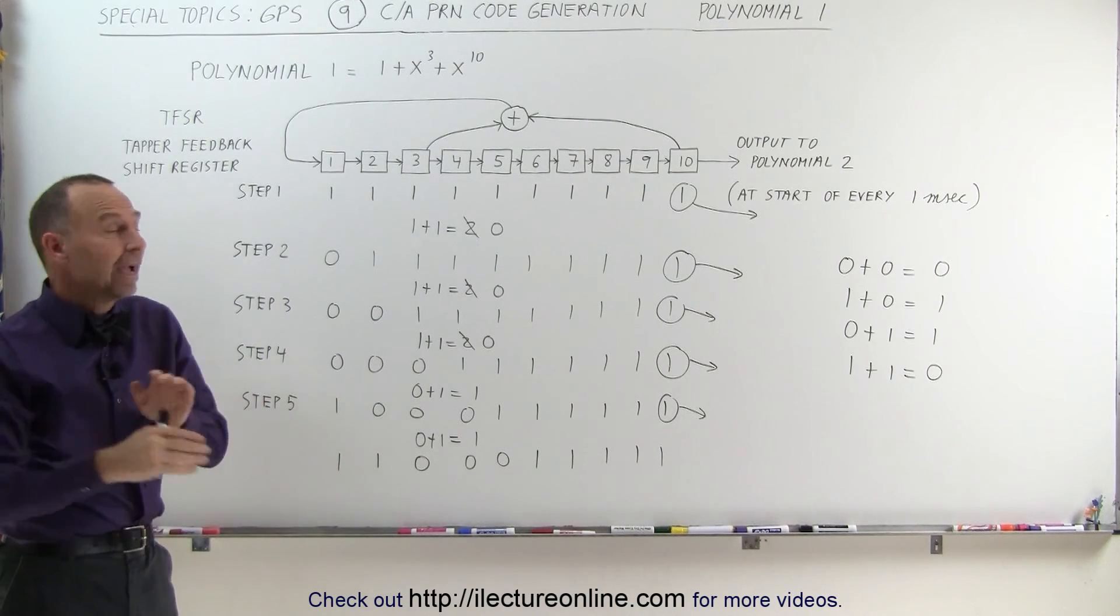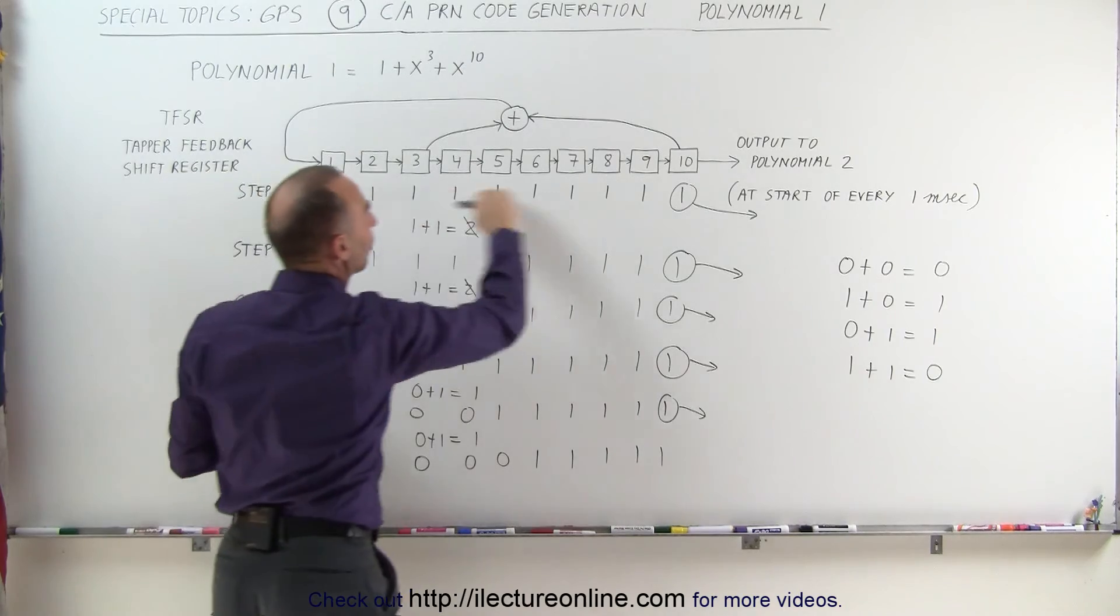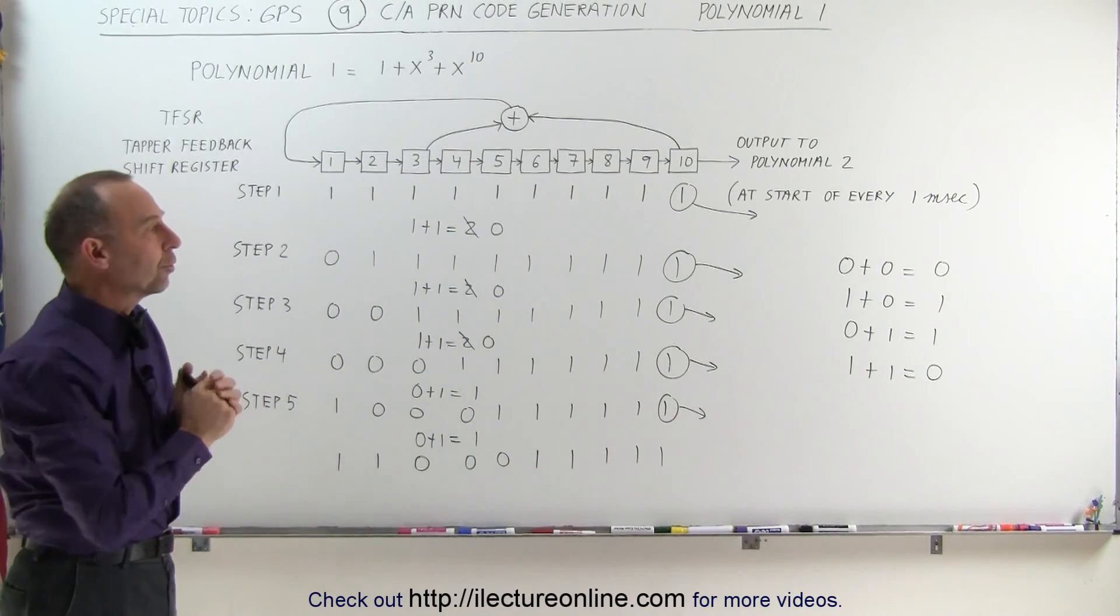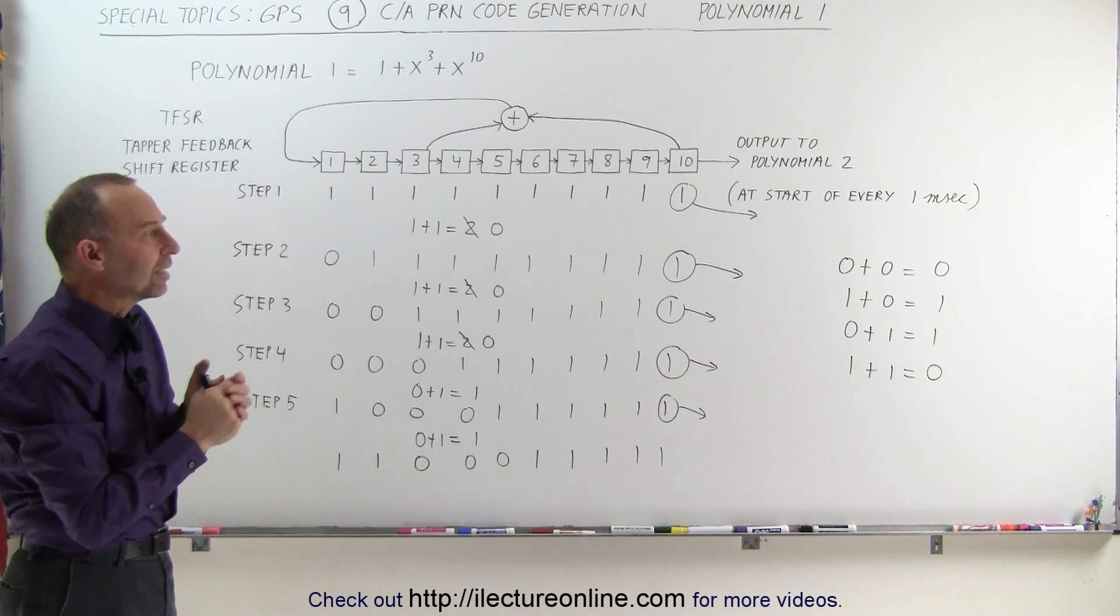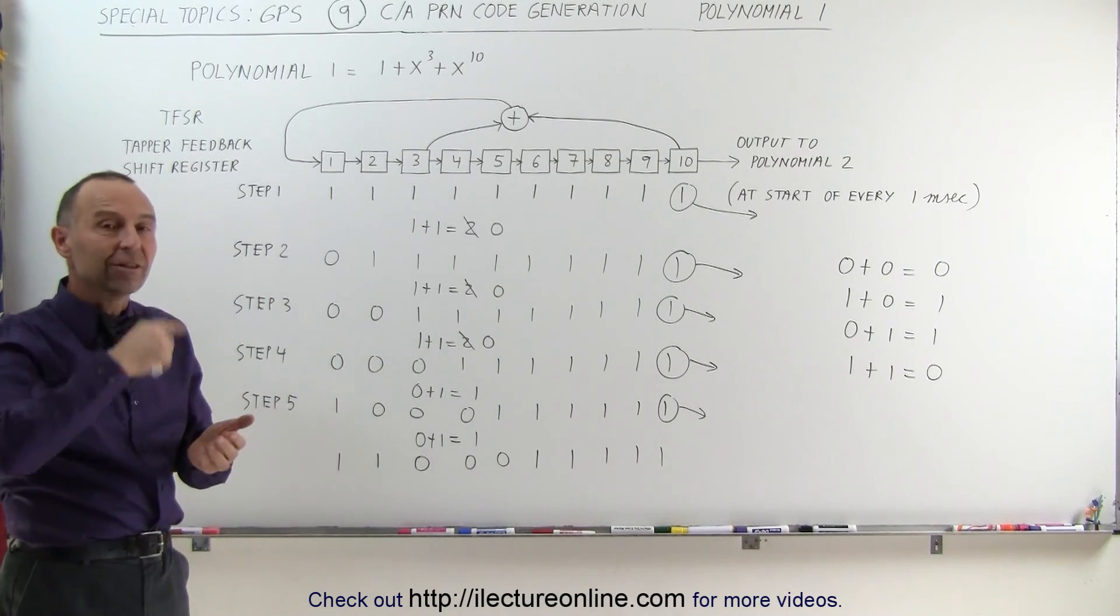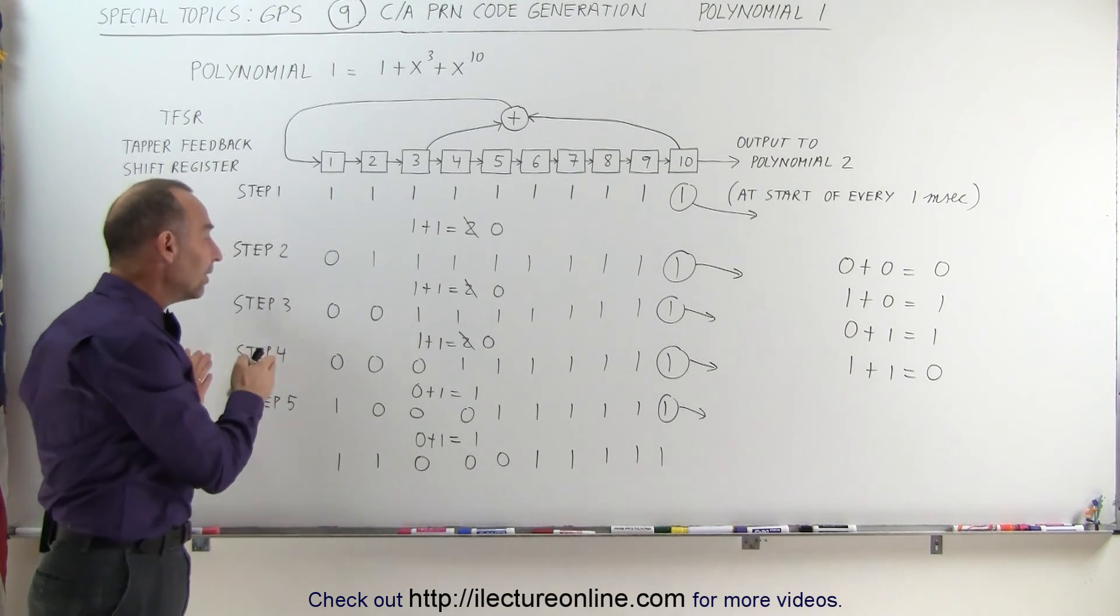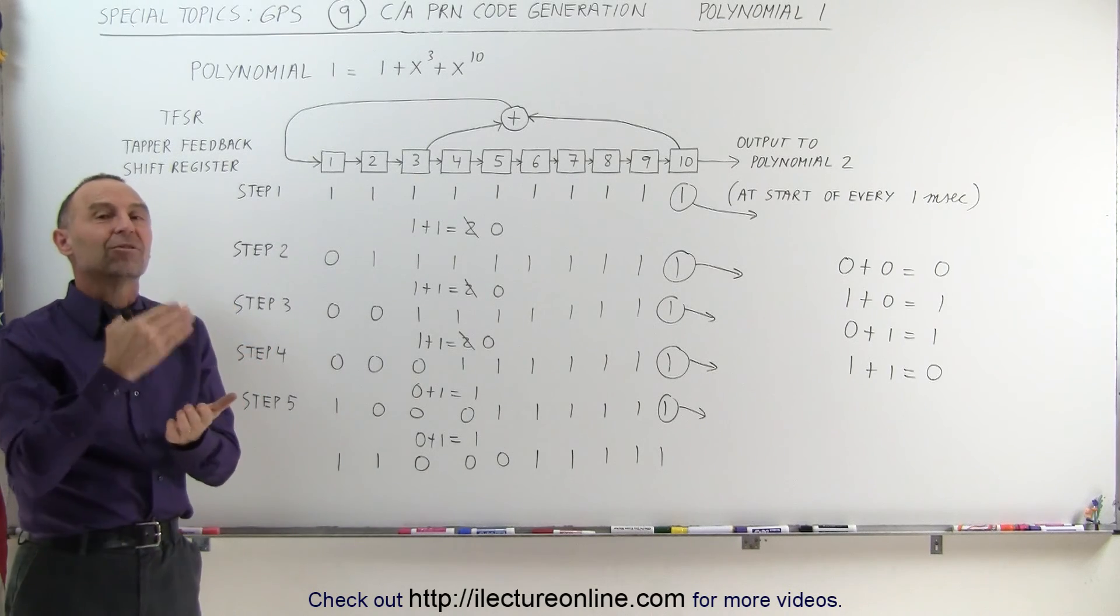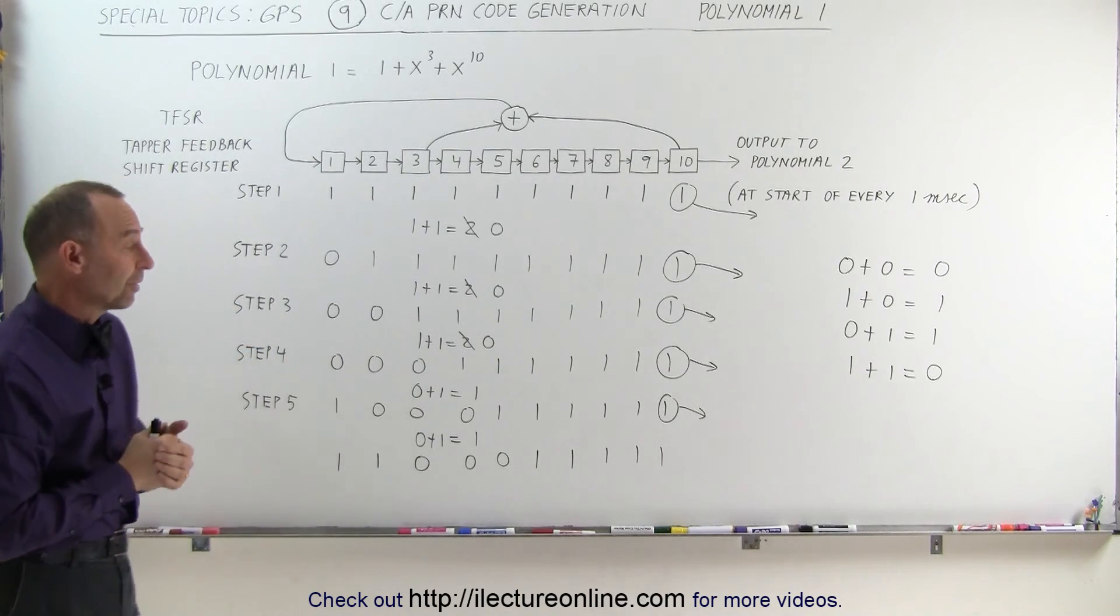The 1,024th time, everything gets reset. They all go back to 1. That message is then sent out during the duration of a single millisecond. And then the whole process starts over again. And the same message gets sent time and time again, every millisecond. And the contents of that will then indicate to the receiver that this is coming from a specific space vehicle, from a specific satellite.